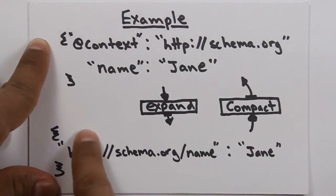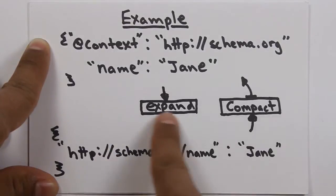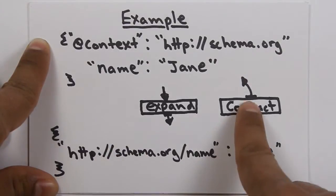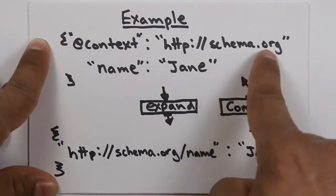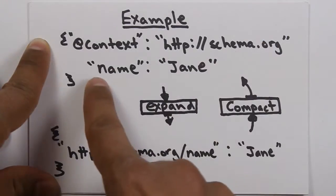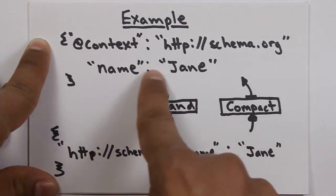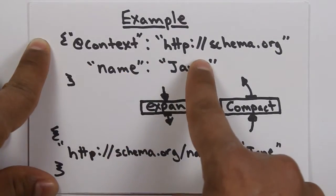Now, if we take that same object, note that the context has been removed. If we take that same object and send it back through the compaction process, we end up where we started, with a context added back into the object in short key-value pairs such that a developer can more easily work with the data.